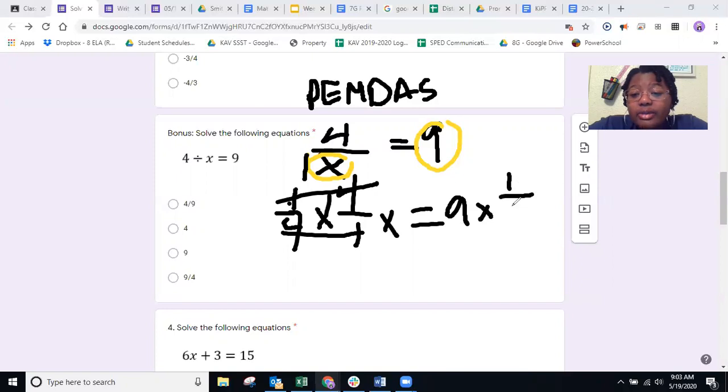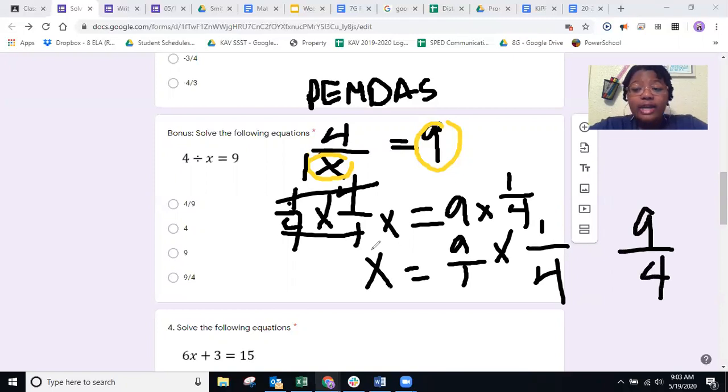So that means you get 9 times 1 fourth. So that means x is equal to, remember you would put that 1, so it'd be 9 over 1 times 1 over 4. And you multiply across, so you get 9 times 1, so 9, 1 times 4 is 4. So you should have 9 fourths for your answer. So it should be D.